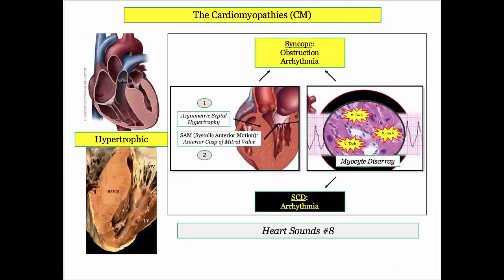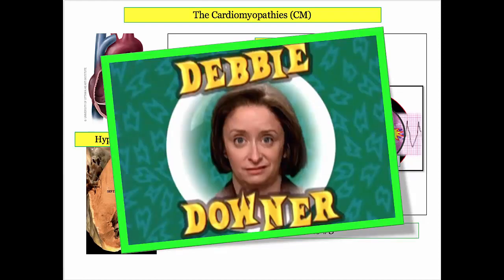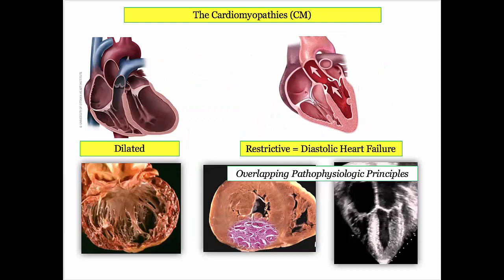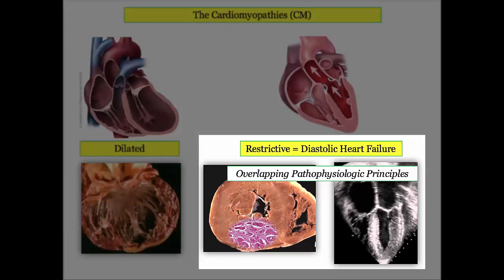Hypertrophic cardiomyopathy has already been covered elsewhere, specifically during the sound module, presented with valve disorders due to the physical exam findings and obstructive physiology that overlaps with aortic stenosis. These are the topics we'll discuss in the third and fourth presentations in the heart failure series. The restrictive cardiomyopathies have overlapping pathophysiologic features with diastolic heart failure, so the two will be presented together.